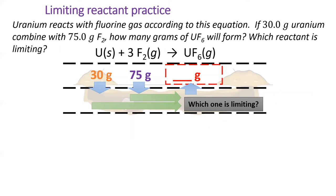first do the stoichiometry dance to convert 30 grams of uranium to grams of uranium hexafluoride, UF6. Then convert 75 grams of fluorine to grams of uranium hexafluoride. I'd like you to pause the video and try it out.